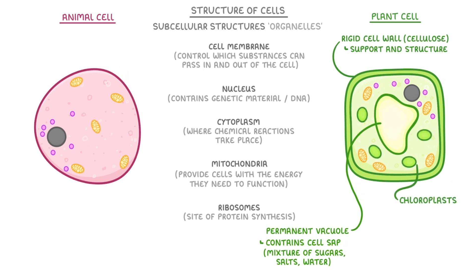And finally, they also have chloroplasts, which is where photosynthesis happens. Basically, photosynthesis is the process by which plants use energy from the sun to make sugars like glucose. To help with this, chloroplasts contain a green substance called chlorophyll, which absorbs the light energy that's needed for photosynthesis. It's this chlorophyll substance that makes plant leaves green.